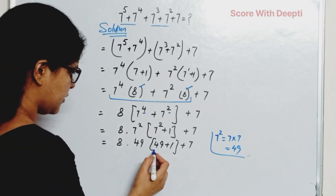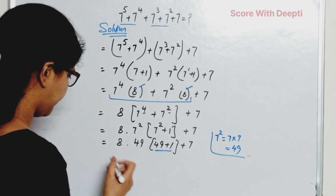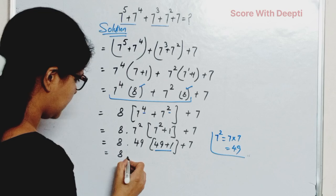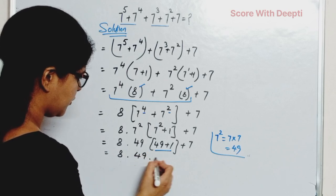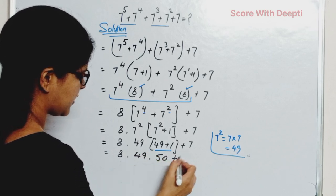Next, we solve this and get 8 * 49 * 50 + 7.